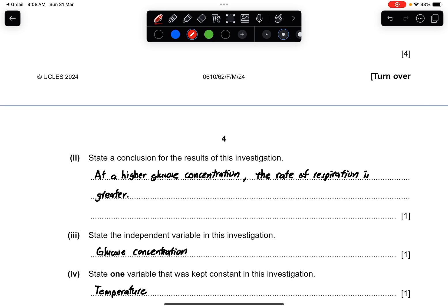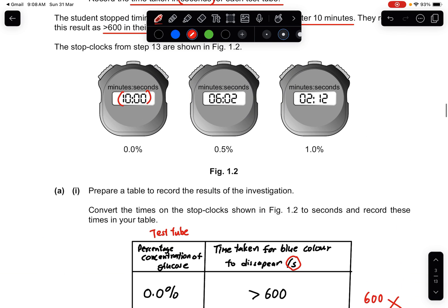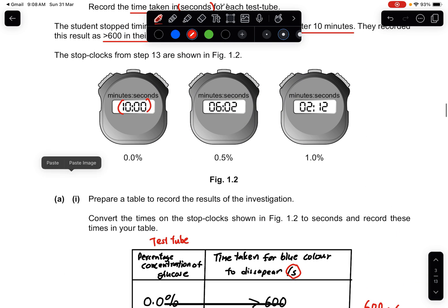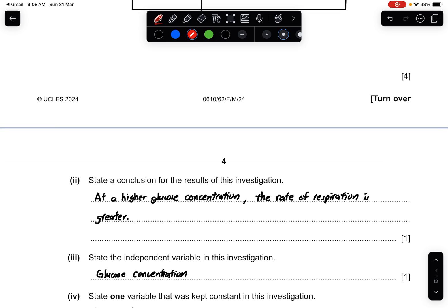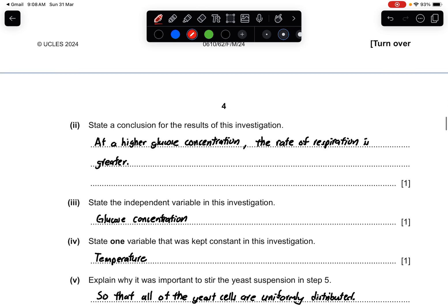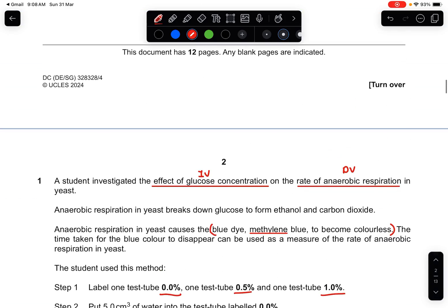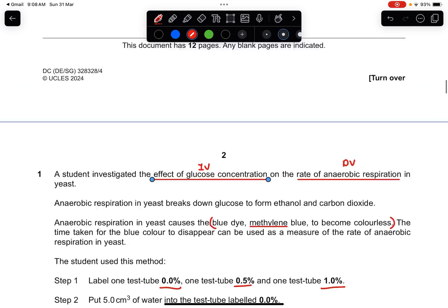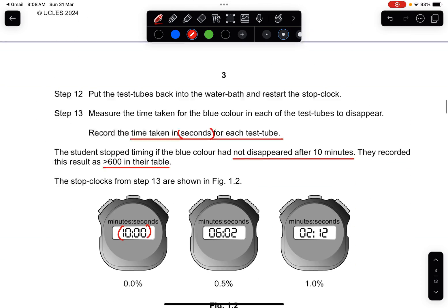Part 2: State the conclusion for the results of this investigation. So what can you see from here? The higher the glucose concentration, you can see that the rate of respiration is also higher. So the conclusion is just comparison between the IV together with the DV. So in the end, it will be the higher glucose concentration, rate of respiration is greater. Part 3: State the independent variable in this investigation. This is very easy. If you read here, it's the effect of the glucose concentration. So glucose concentration will be the IV.